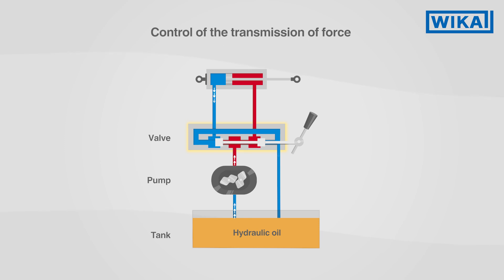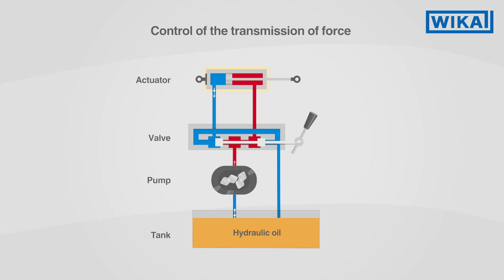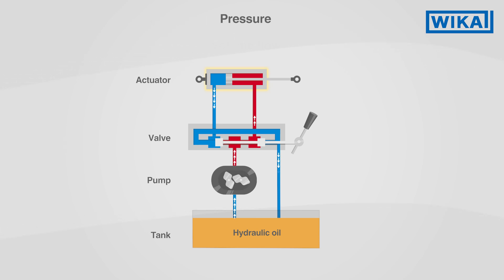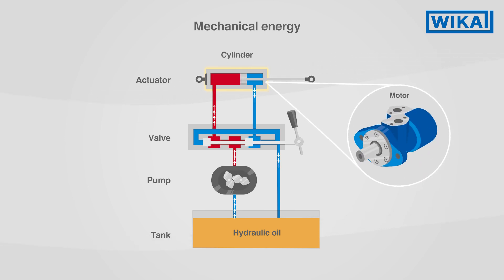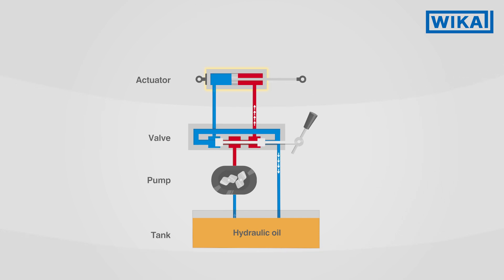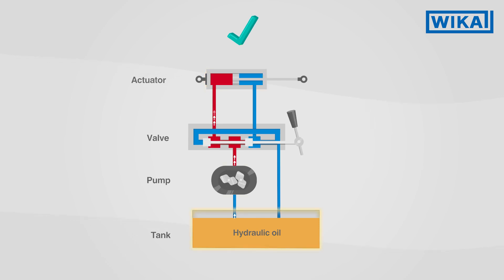In this way, they control the transmission of force and the direction of the oil flow. In the actuator, the pressure and volume flow transmitted by the pump is converted back into mechanical energy. Cylinders or motors can be used as actuators. The liquid flows back into the tank and has completely passed through the circuit.